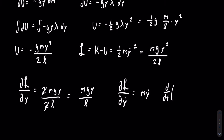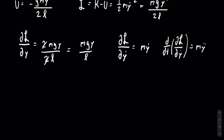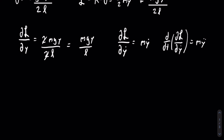Lastly, we find the time derivative of that, which is just m·y-double-dot. We then equate the partial of the Lagrangian with respect to y and the time derivative of the partial with respect to y-dot, giving m·y-double-dot equals mgy over l. The m's cancel, and we get that y-double-dot, or the acceleration, equals gy over l.